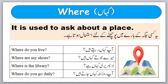Our next word is 'where,' जिसके मीनिंग है कहाँ. It is used to ask about a place. किसी जगह के बारे में पूछने के लिए question के start में हम word 'where' इस्तेमाल करते हैं. For example: Where do you live? आप कहाँ रहते हैं? Where are my shoes? मेरे जूते कहाँ हैं? Where is the library? लाइब्रेरी कहाँ है? Where do you go? आप रोज़ाना कहाँ जाते हैं?